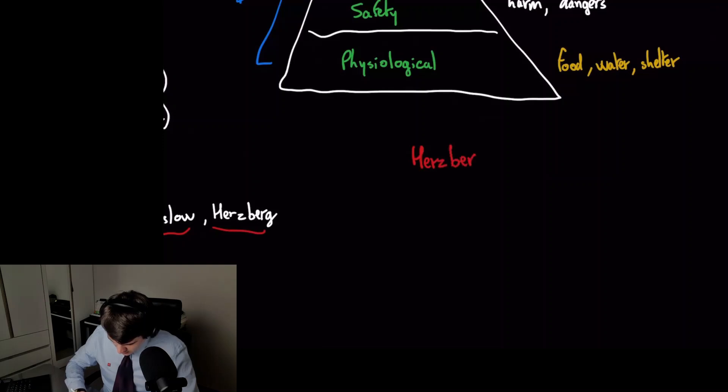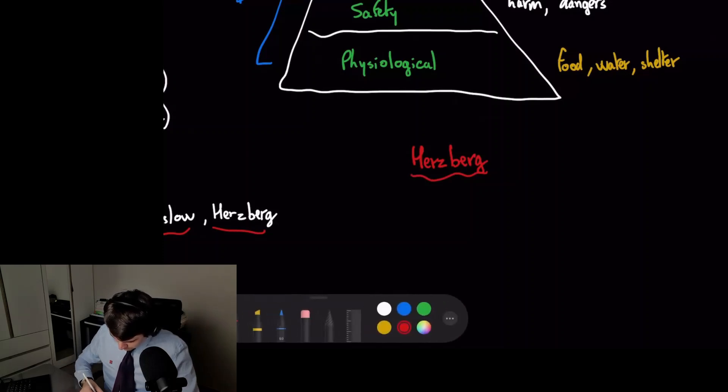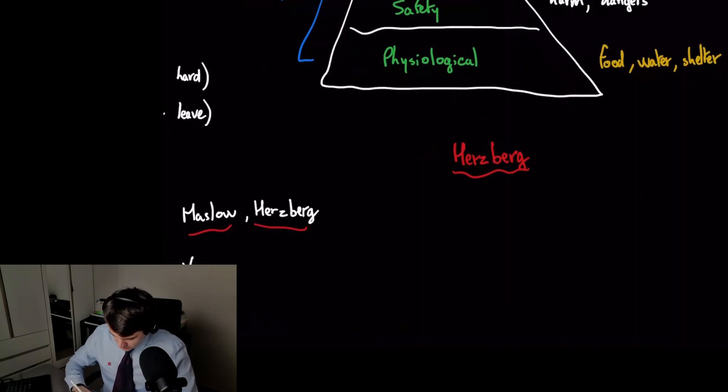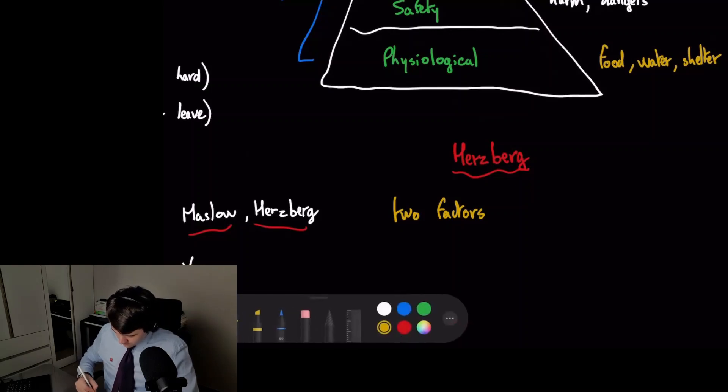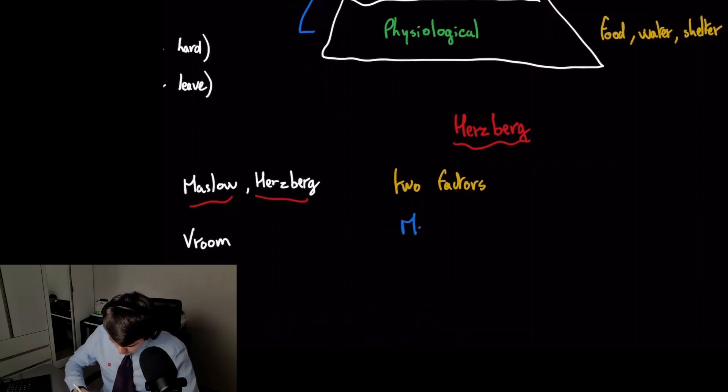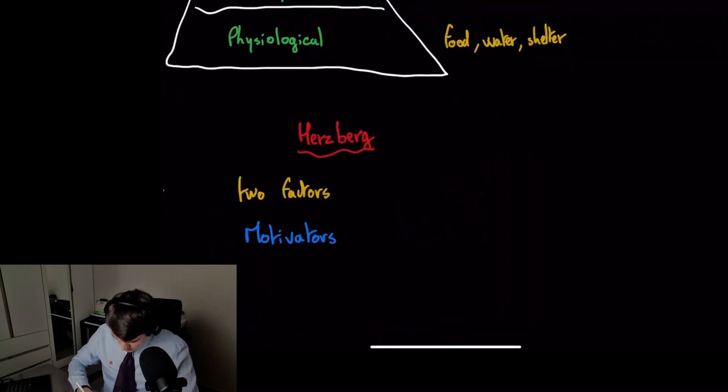Herzberg has a similar but slightly different way of looking at motivation. He says there are two factors: one is called motivators, and the other one is called hygiene factors.